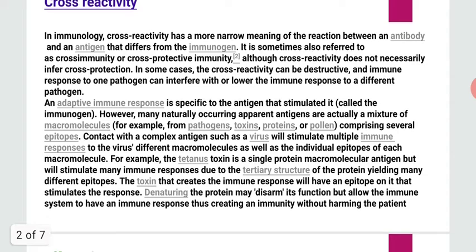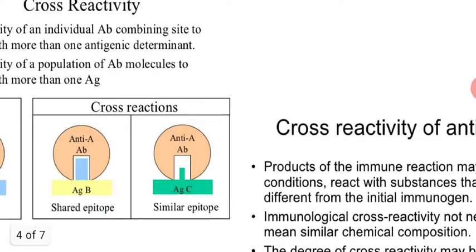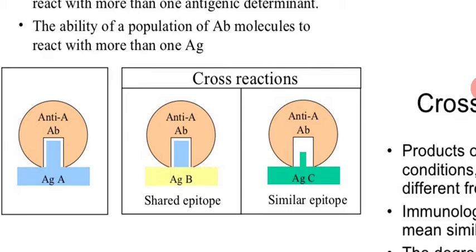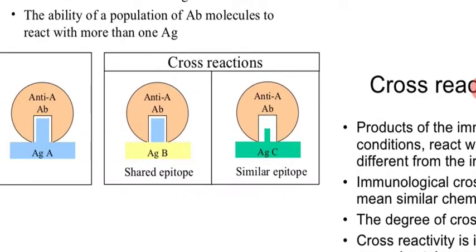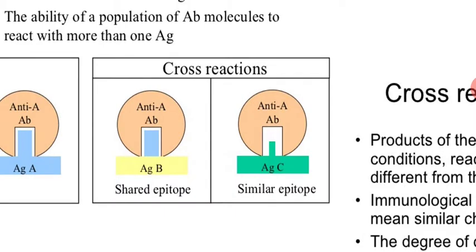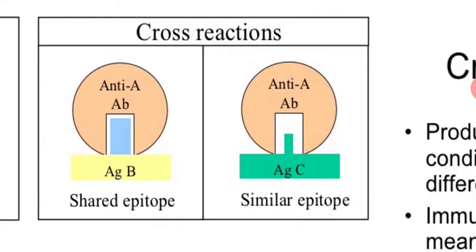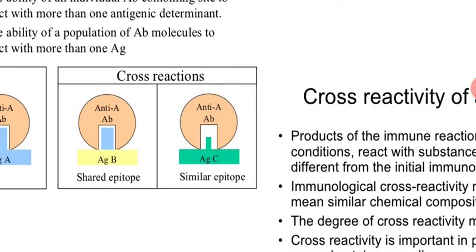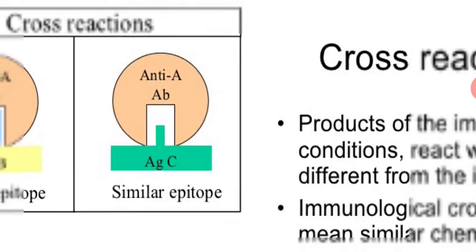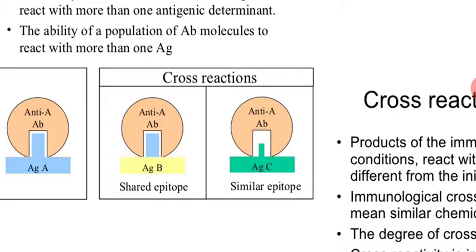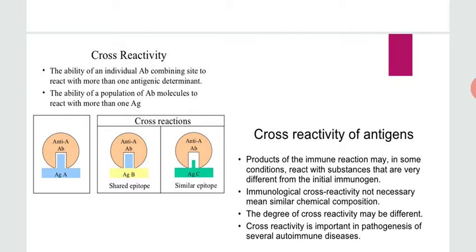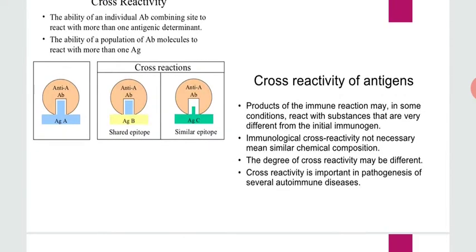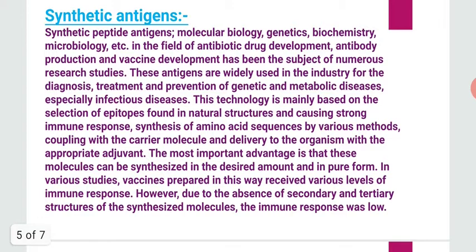To illustrate this, you can see antigen A, antigen B, and antigen C, and one antibody — anti-A antibody. The structure of antigen A and antigen B fit into the antibody like a lock — they are the same. But antigen C has a slightly different structure; however, it is also bound because some parts of its structure are the same. That is what we call cross reactivity.